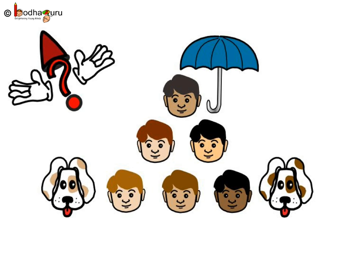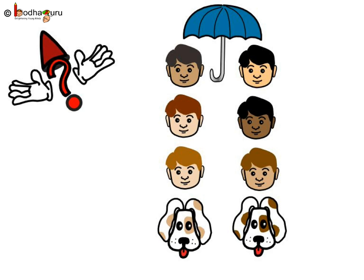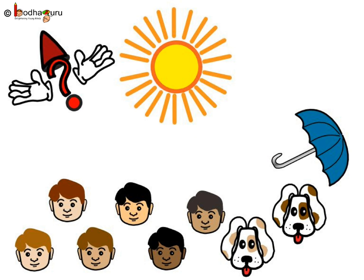Talking of rain, let me ask you a riddle. If six children and two dogs were under an umbrella, how come none of them got wet? Think harder. Was it because the umbrella was a very big one? No. Or was it because all the kids were standing on top of each other? No. It's because it wasn't raining!